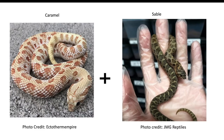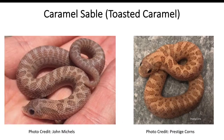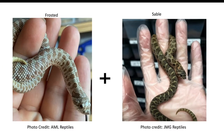Now we're going back to just the caramel gene and combining it with the sable — two recessive genes. When you combine those two together you get a snake called the toasted caramel, a very cool combination that I think a lot of people are going to start producing in 2021.